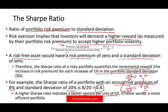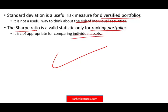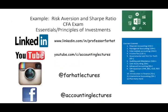The Sharpe ratio is very similar to the risk aversion measure, but it's looking at standard deviation rather than variance. The standard deviation is a useful risk measure for diversified portfolios — it's not for individual securities. The Sharpe ratio is a valid statistic for ranking portfolios in terms of risk premium and standard deviation, but it's not appropriate to use it to look at individual assets.